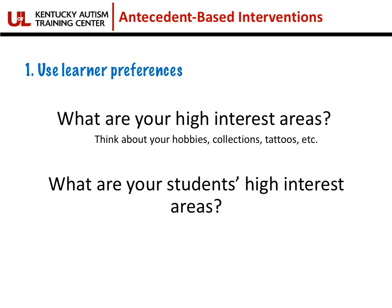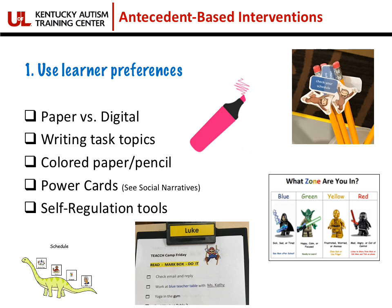The first type is using learner preferences. Think about your own high-interest areas — the things you collect, your hobbies, your favorite TV show to binge watch, how you treat yourself after a long week. Just as you and I have high-interest areas, our students with autism also have those, and some may be a bit unconventional. There are many opportunities to incorporate student preferences throughout their day — giving them the option of paper versus digital assignments, letting them write about topics they're interested in, or even simply changing the color of their paper or pencil.